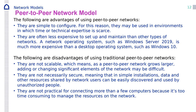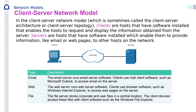Windows 10 is an operating system for peer-to-peer. For a client-server network, we need Windows Server — which is more expensive than Windows 10. In the client-server network model, the client sends a request to the server, and the server responds.